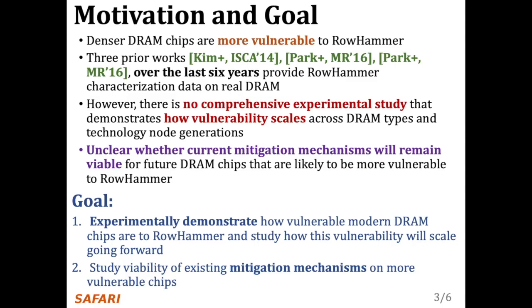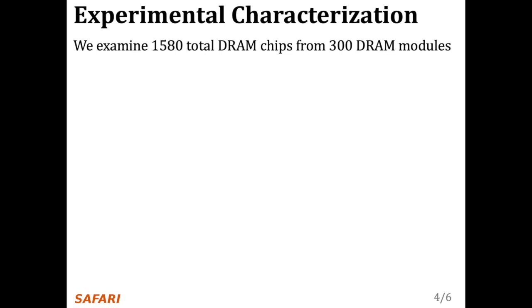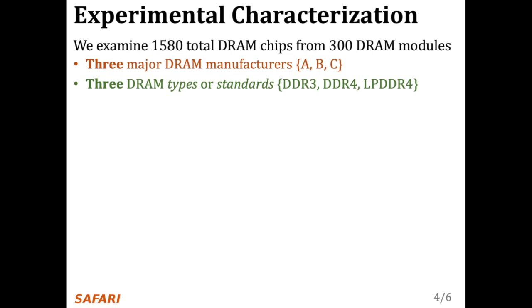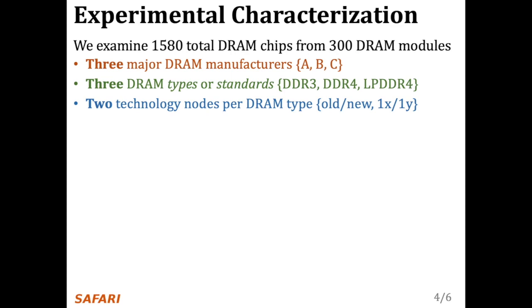We characterize over 1,500 DRAM chips from 300 DRAM modules, spanning the three major DRAM manufacturers, which we anonymize as A, B, and C, of three DRAM types or standards: DDR3, DDR4, and LPDDR4. We identify two technology nodes per DRAM type — old and new, 1X and 1Y — which we categorize based on manufacturing date, datasheet publication date, purchase date, and characterization results.